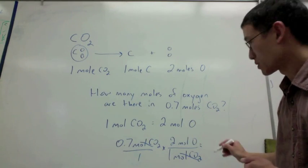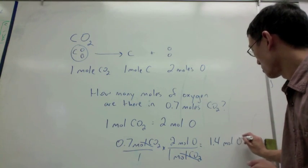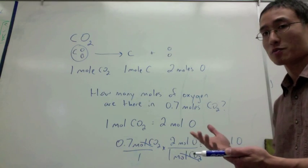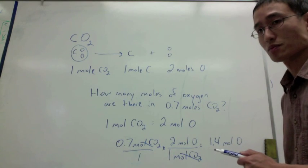It's twice the amount, so 0.7 times 2, ends up being 1.4 moles of oxygen, which makes sense because for every mole of CO2, you have double the amount of oxygen.